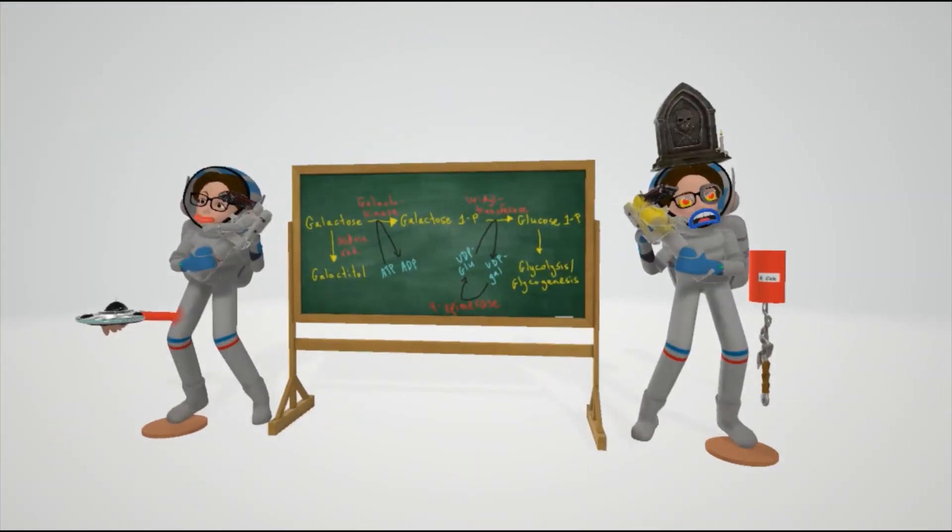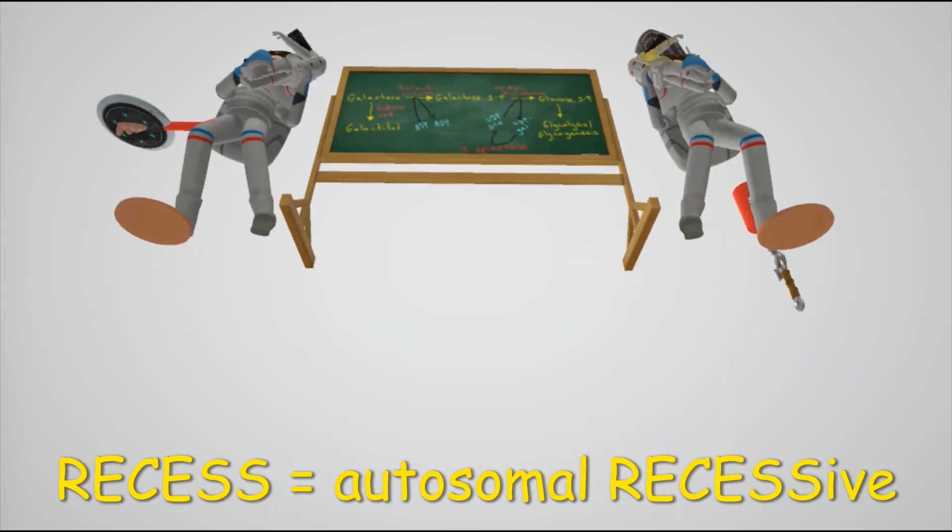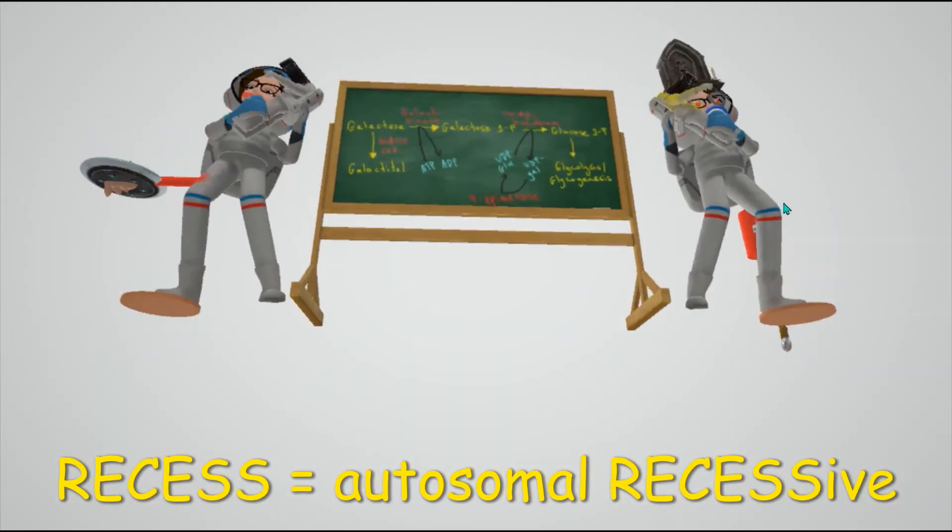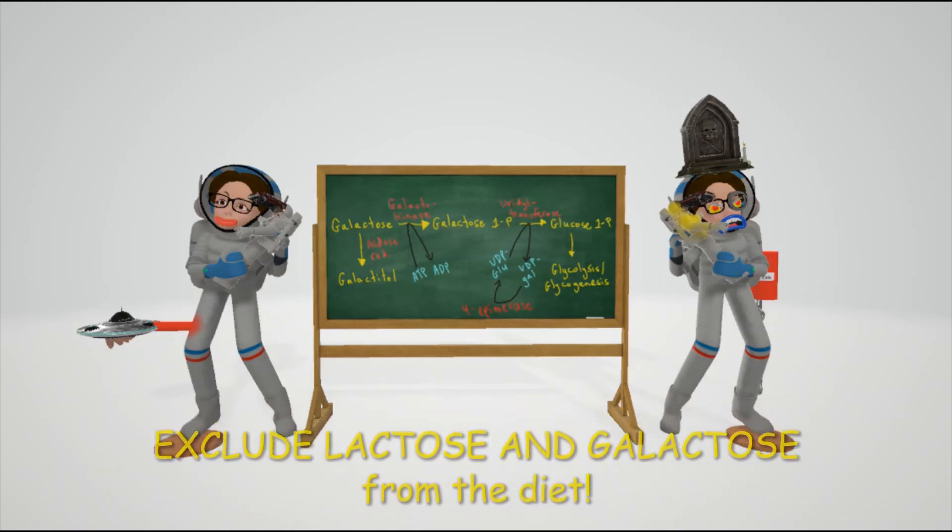As we mentioned in the last video, both galactokinase deficiency and classic galactosemia are autosomal recessive. That's why both of these teachers are standing on Reese's chocolate here in the middle of outer space. Treatment of classic galactosemia includes excluding galactose and lactose from the diet.